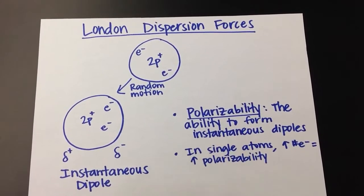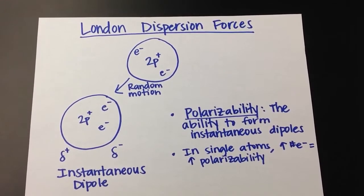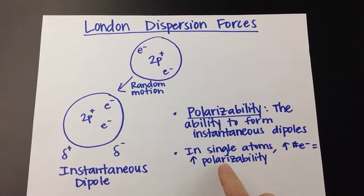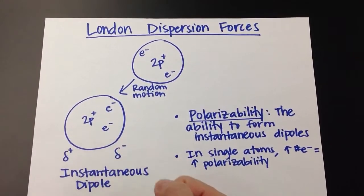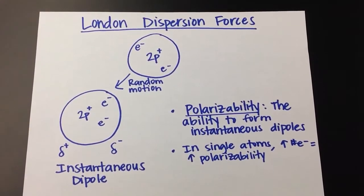So the word we use to describe this is called polarizability. As we increase the number of electrons, we're going to increase polarizability, because if you have more electrons you increase probability that you could have those short second instantaneous dipoles.